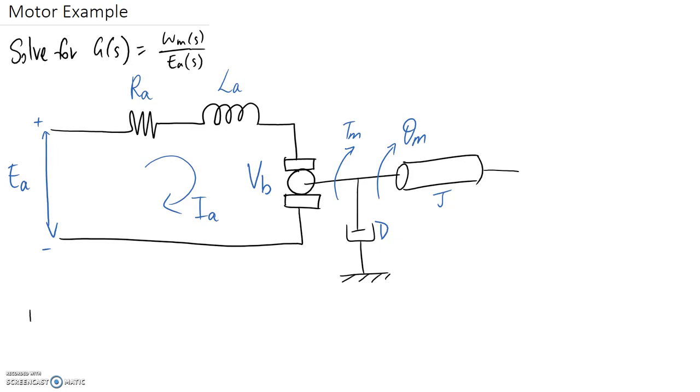So as I said, first step is looking at the electrical side of the system. So to analyze this electrical system we can treat it as mesh analysis and therefore the equation that we need to solve is that the sum of the voltages in that circuit are equal to zero.